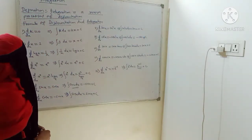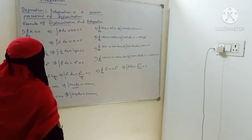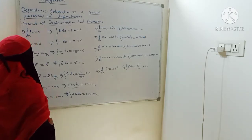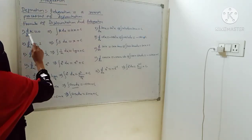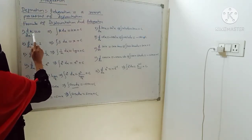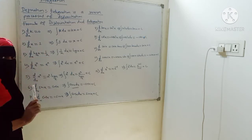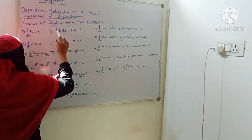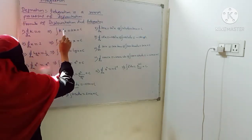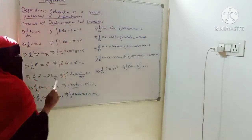Now look at the formula of the derivative and the integration. This is point number 1. d/dx of a constant is 0 — the derivative of a constant is 0. But the integration of a constant k into dx is kx plus C.